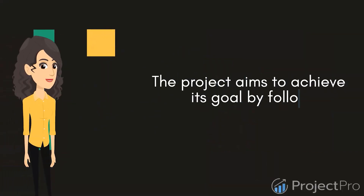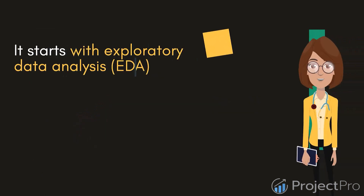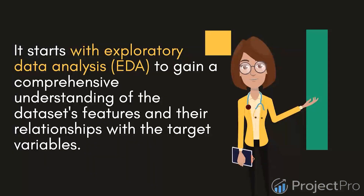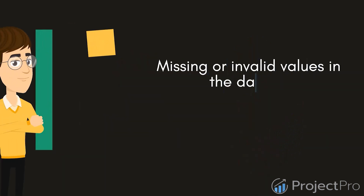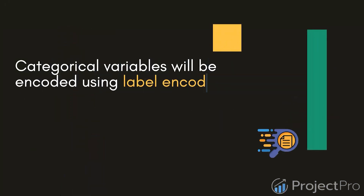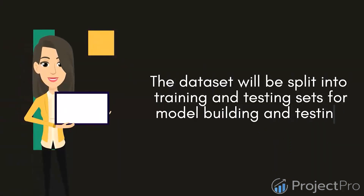The project follows a specific approach, starting with exploratory data analysis to gain a comprehensive understanding of the dataset's features and their relationships with the target variables. Missing or invalid values will be addressed through appropriate imputation techniques. Categorical variables will be encoded using label encoding or other suitable methods to improve model performance, and the dataset will be split into training and testing sets.